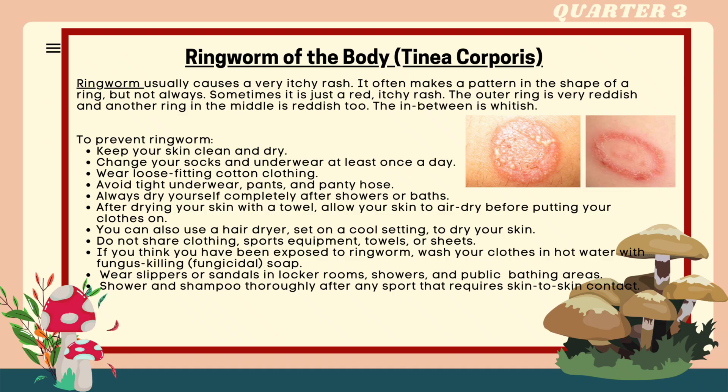Ringworm of the body, or tinea corporis, usually causes a very itchy rash. It often makes a pattern in the shape of a ring, but not always. Sometimes it is just a red, itchy rash. The outer ring is very reddish, and another ring in the middle is reddish too, while the area in between is whitish.